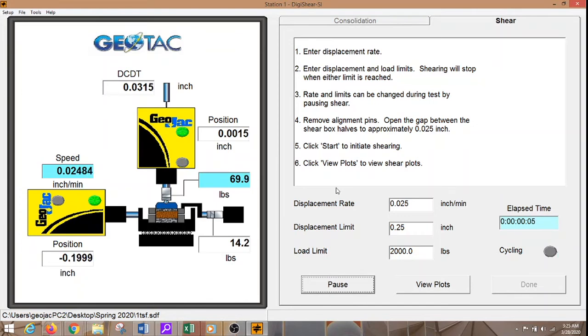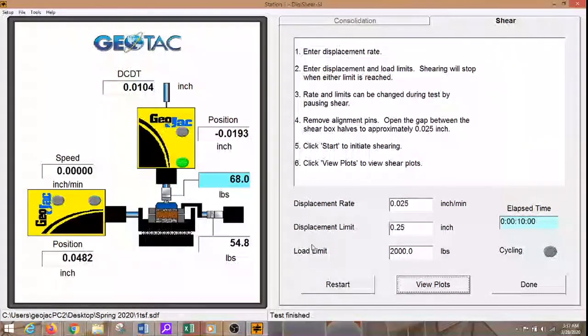The soil is now being sheared and when that is done we will move over to the next normal stress. That will be 2 TSF. At this point our soil must have failed so I am just going to go ahead and look at the plots.